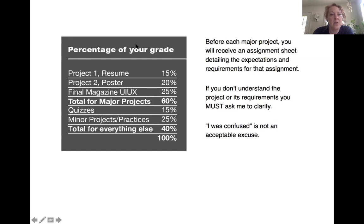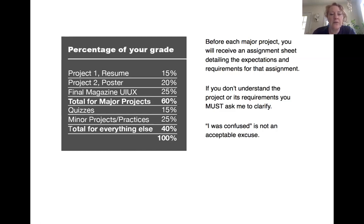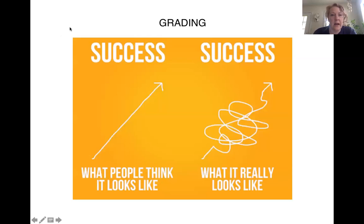In your syllabus, it'll give you the percentage of what each of the projects count. You'll have three major projects that will total 60% of your grade. Your quizzes — you will have one each week, so in the first term summer session there will be four — those collectively will count 15% of your grade. The minor projects and practices, which you will have about eight of, will total 25% or a quarter of your grade. Be aware of what each thing counts.